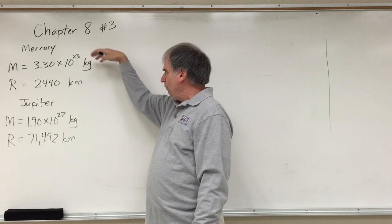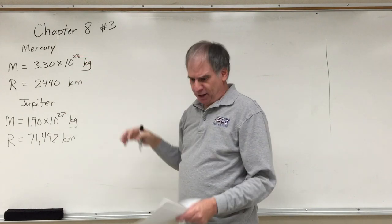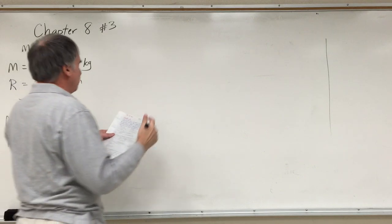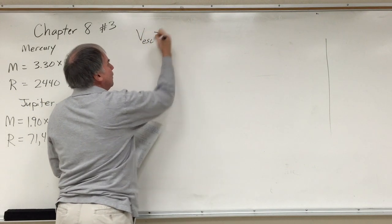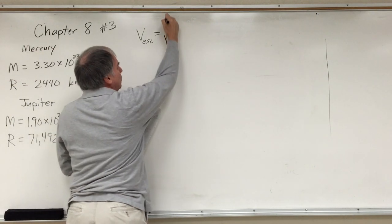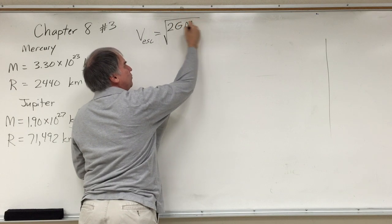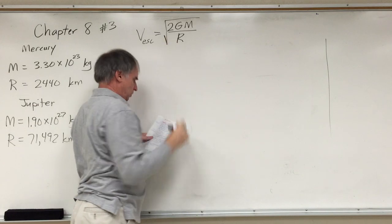So from the textbook I've looked up for Mercury and Jupiter both their mass and their radius, and the formula from Chapter 3 is that the escape velocity from a planet or other body is the square root of 2 times the gravitational constant times the mass of the planet divided by the radius of the planet.